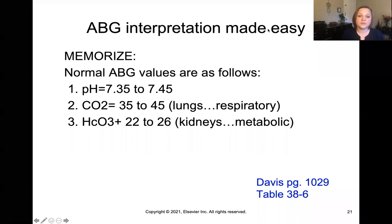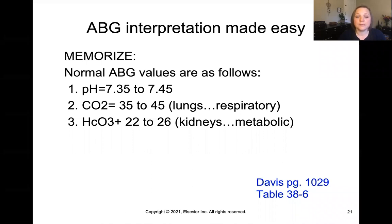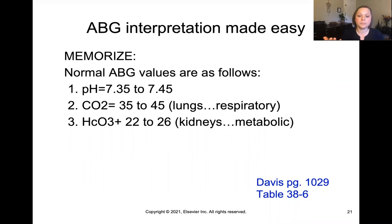Here are the levels you need to memorize: the pH, the CO2, and the bicarbonate. You'll need to understand what those are showing you. The pH shows you how acidotic or alkalotic the blood is. The CO2 is going to show you the respiratory involvement from the lungs, and the bicarb is going to show you the metabolic involvement from the kidneys.